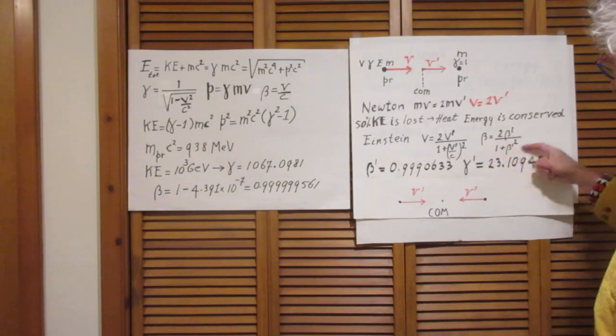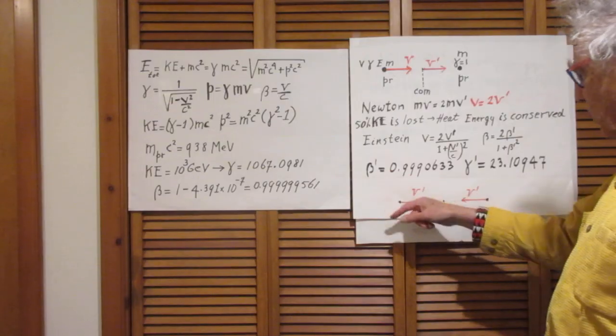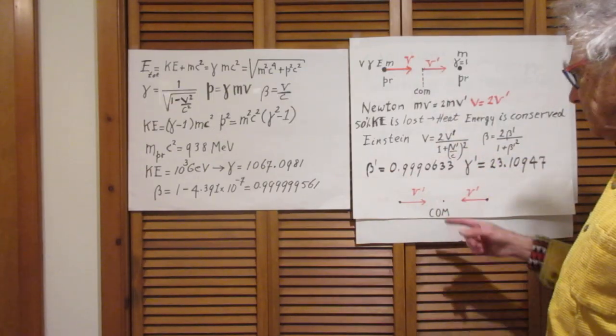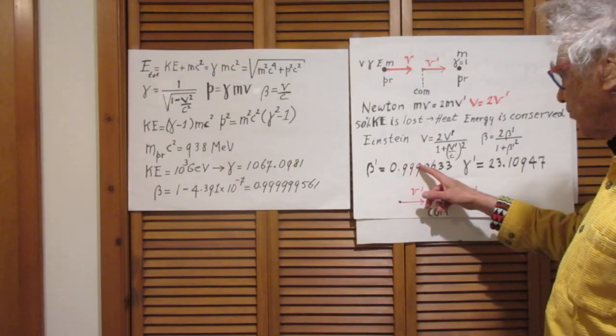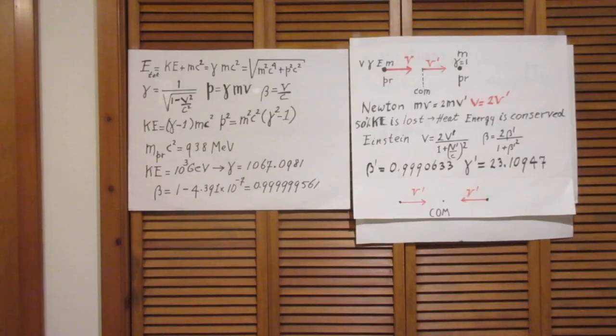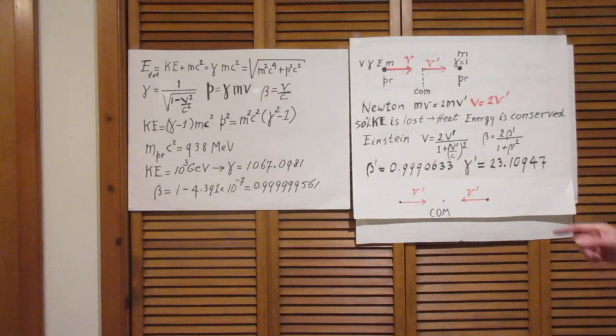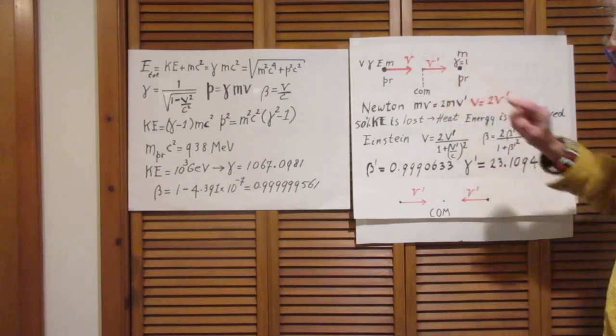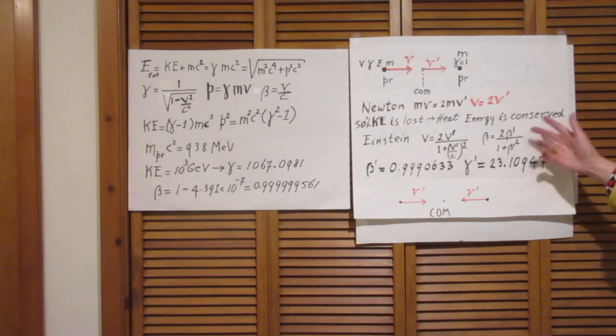You can solve this equation, high school algebra, and you will find that V' is almost as large as V. Instead of 9, instead of 6 nines here, you see 3 nines here. But that makes a big difference for gamma. So gamma prime, connecting with this prime, is 23 point, call it 11.